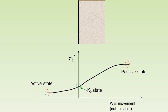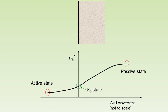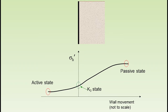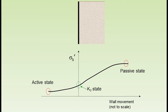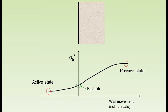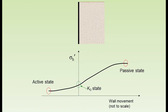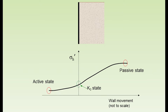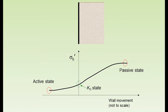A graph of wall movement versus sigma H is drawn. The K0 state is shown at the center. On the passive side, sigma H is greater than the K0 state. On the active side, sigma H is much less than the passive state. K0 lies in between the active and passive states.